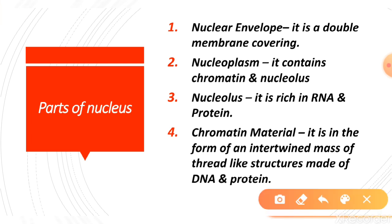On the outer side there is a double-layered structure called the nuclear envelope — the envelope covers the inside of the nucleus. Inside there is a liquid called nucleoplasm, and within the nucleoplasm are chromatin and the nucleolus.